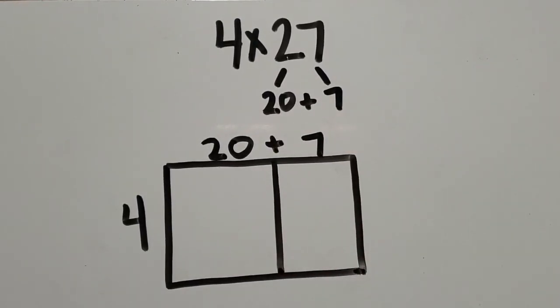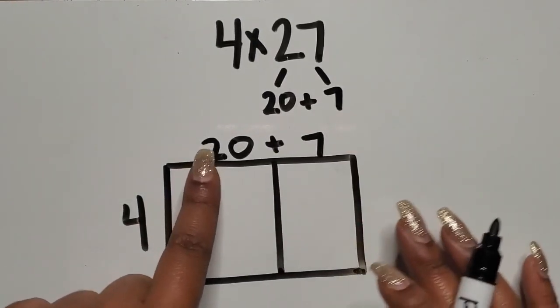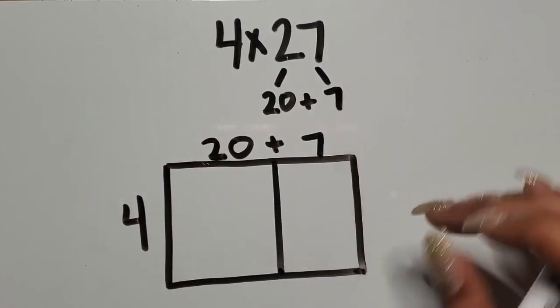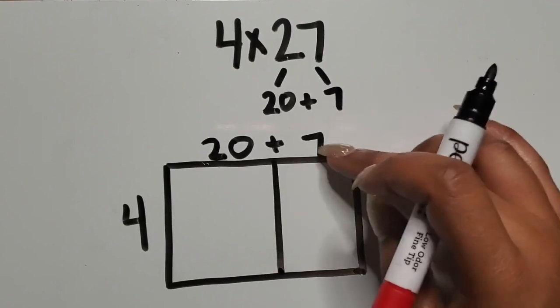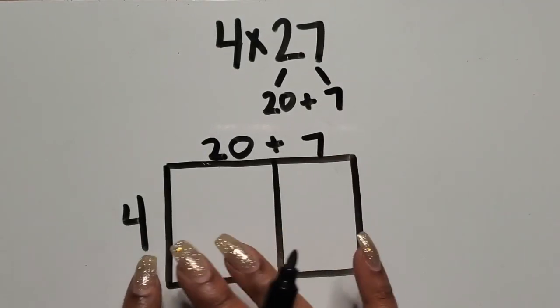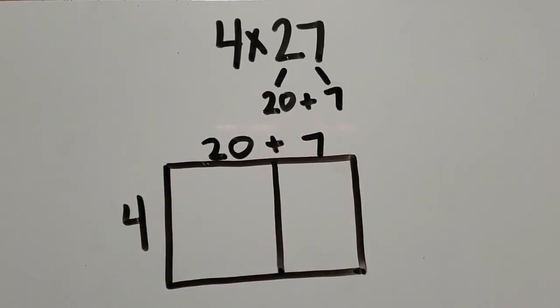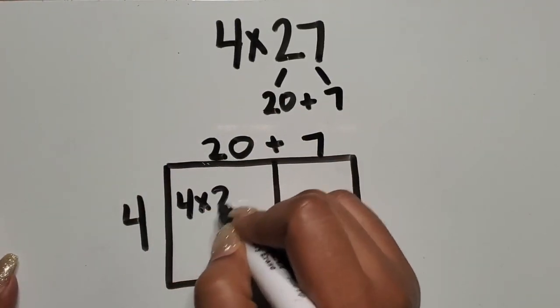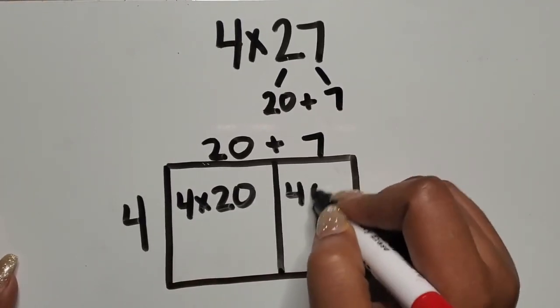You can put the plus sign there. Eventually students will stop writing the plus sign, but they should understand that first section represents 20 from the 27 and the second section represents 7 from the 27. So I'm just going to multiply them in their parts how they are. So four rows of 20 and then four rows of seven.